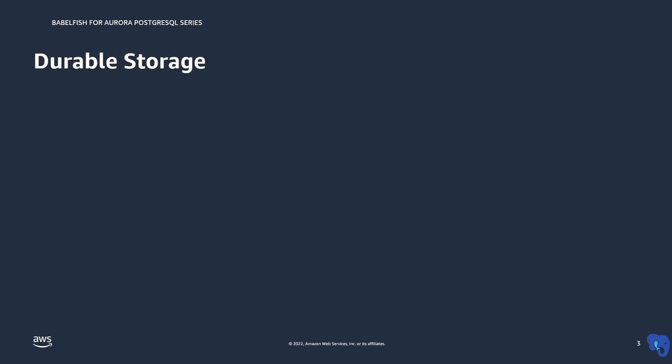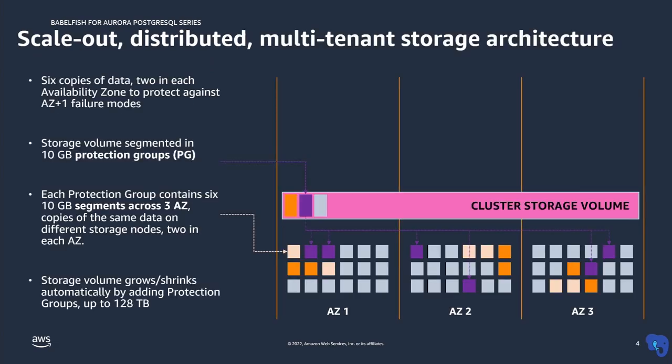Let's look at the storage architecture in Aurora. Aurora writes into six copies of data, with two copies in each availability zone. The quorum for writes is four and the quorum for reads is three. This means it acknowledges writes as soon as it writes to at least four nodes, and it allows reads when a minimum of three nodes are available. The storage volume is segmented into 10 GB protection groups and the storage scales by adding these 10 GB protection groups.